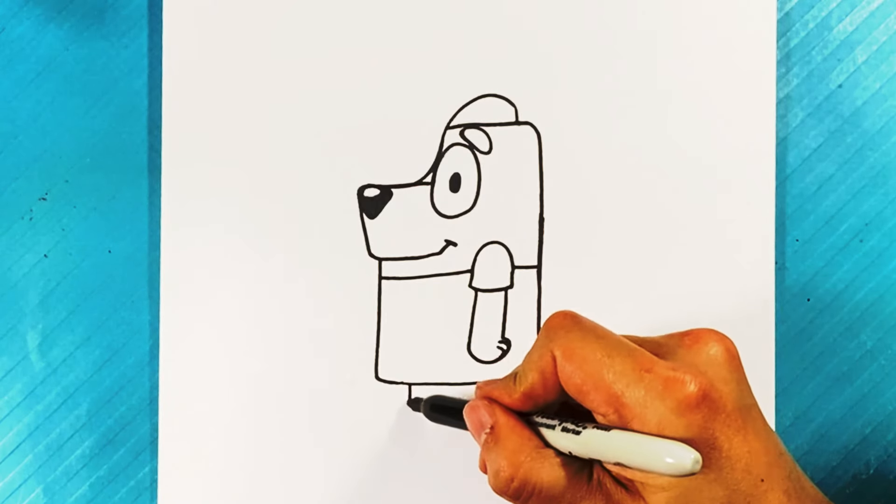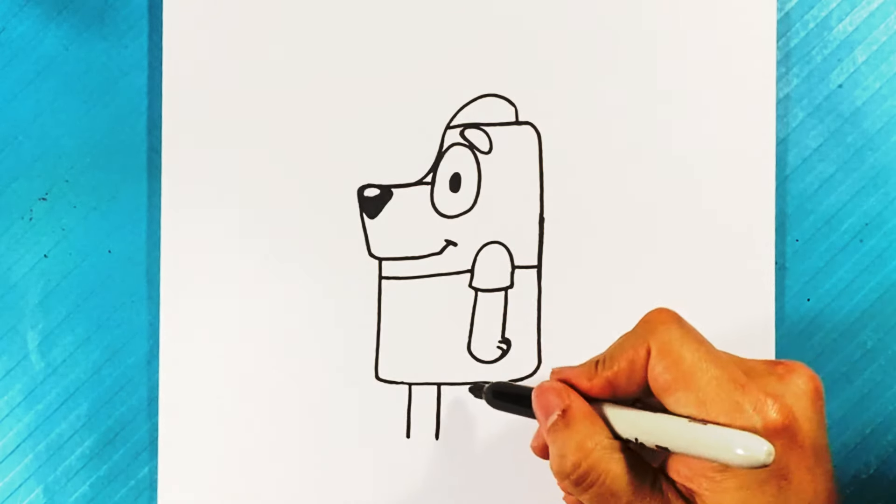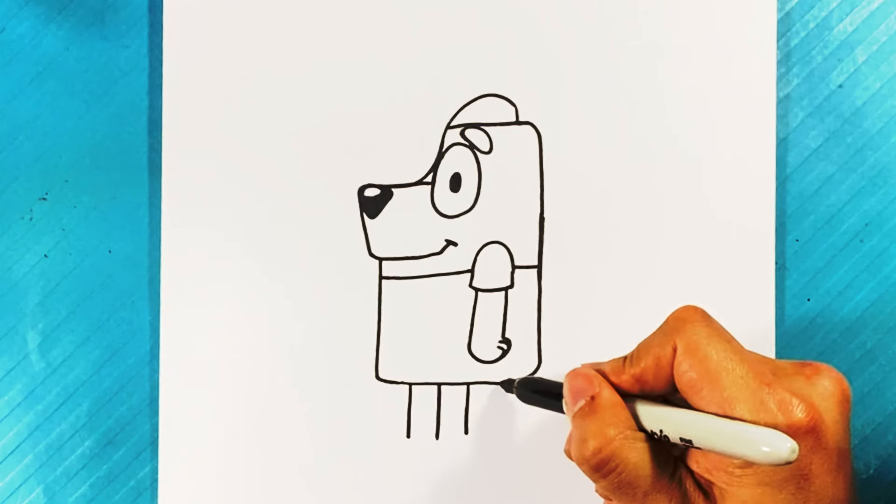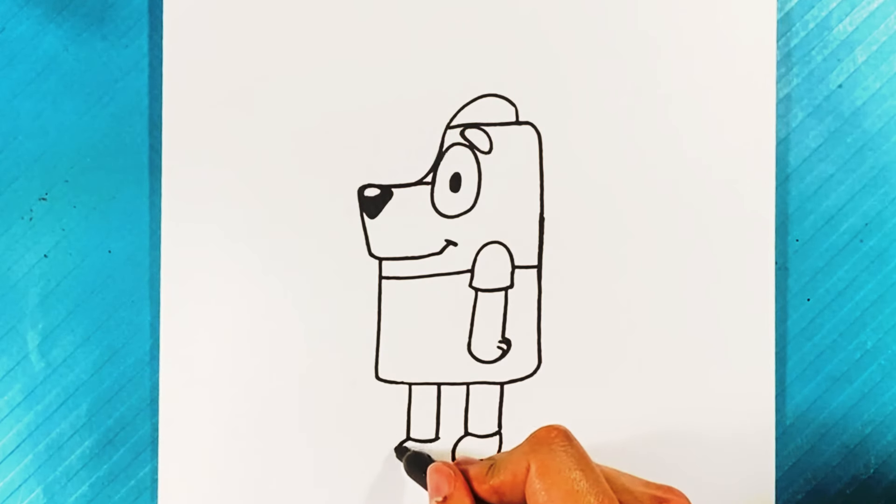Now we're going to go over here and draw a line down. Line down here, line down here. And then this is going to be more Bluey, more kind of Bryson. Curve down here is going to be pants. Curve down and up, that's a shoe. Curve down and up, that's a shoe right there.